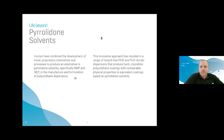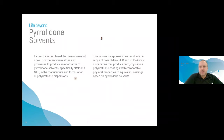Life beyond pyrrolidone solvents. Incares has combined novel proprietary chemistries and processes to produce an alternative to pyrrolidone solvents, specifically NMP and NEP, in the manufacture and formulation of PUDs. This innovative approach has resulted in a range of hazard-free PUDs and PUD acrylic hybrid dispersions that produce hard crystalline PU coatings with comparable physical properties to equivalent coatings based on pyrrolidone solvents.